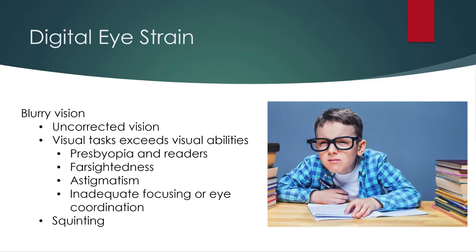Inadequate focusing or eye coordination is another cause. If our eyes aren't aligned properly, one eye may be doing more work than the other, causing more symptoms. Getting your focusing system and eye coordination tested will really help prevent and improve these symptoms. Squinting is another issue — it involves all the muscles around our eyes and eyelids, and even the forehead, which can lead to headaches. Even a headache localized in the front is still a headache. Updating your glasses or adjusting your focusing system correction can help reduce the strain on those overworked muscles.